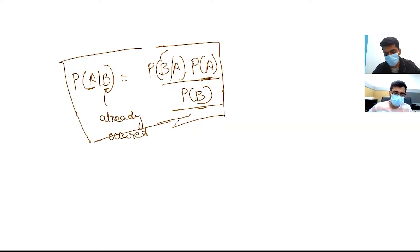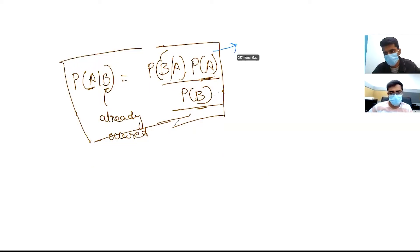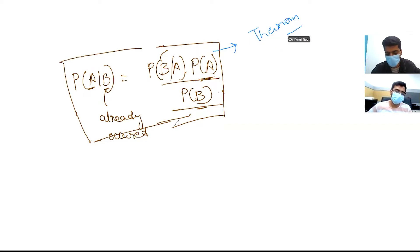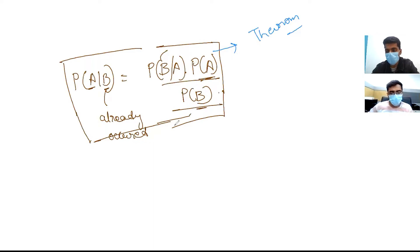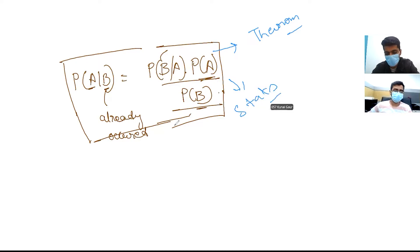Interviewer: This is a theorem — I just want to know the name of the theorem. Candidate: It is Bayes' theorem. We use it — it is part of statistics.